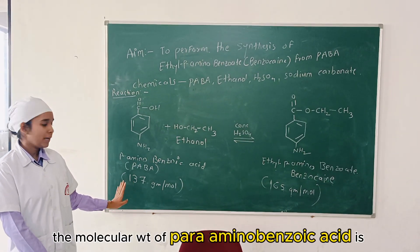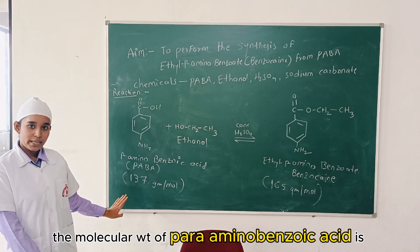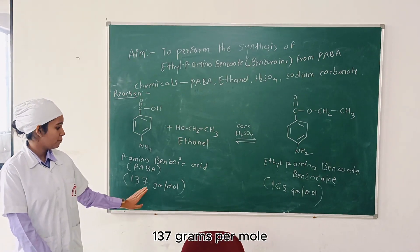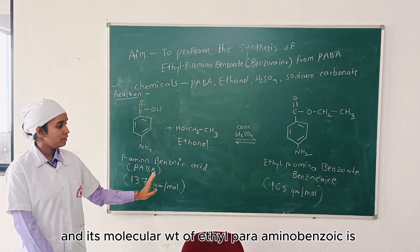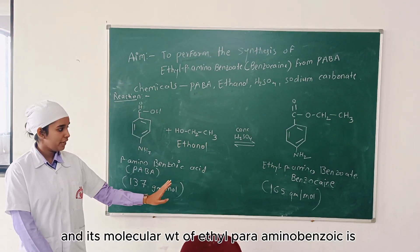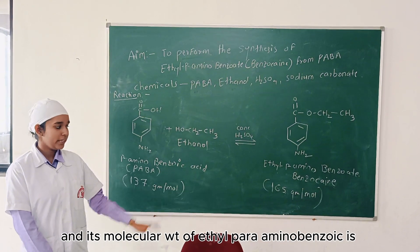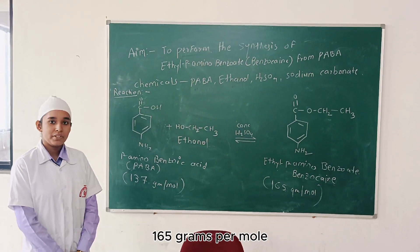The molecular weight of para-aminobenzoic acid is 137 grams per mole, and the molecular weight of ethyl para-aminobenzoate is 165 grams per mole.